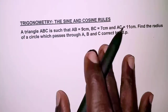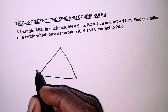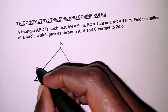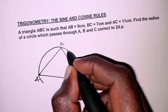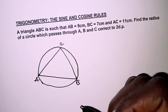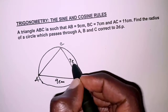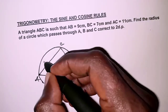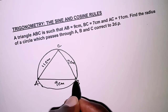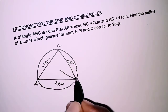We are given a triangle ABC with a circle circumscribing it — that is, passing through the points A, B and C, which are the vertices of the triangle. AB is given as 9 centimeters, BC is 7 centimeters and AC is 11 centimeters. We are required to get the radius of the circle, which we may consider from any of the vertices of the triangle.